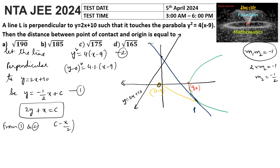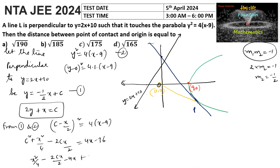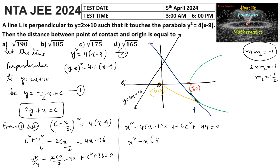Substituting, we get (c − x/2)² = 4(x − 9), which expands to c² + x²/4 − cx = 4x − 36. Rearranging: x²/4 + (−cx − 4x) + c² + 36 = 0, or multiplying through by 4: x² − (4c + 16)x + 4c² + 144 = 0.